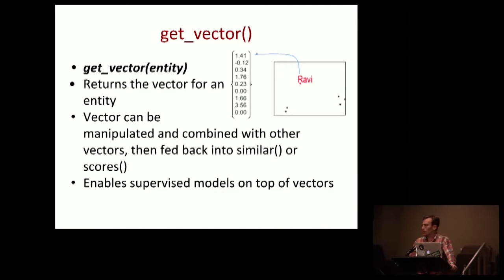Get vector simply gives us the vector out so that we can manipulate it, then feed it back into one of the previous two endpoints.